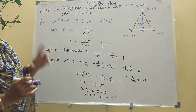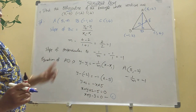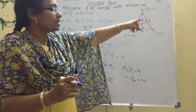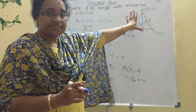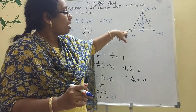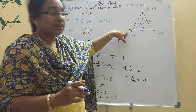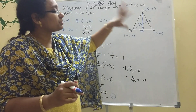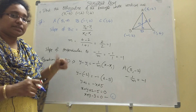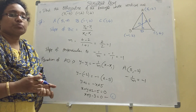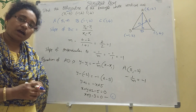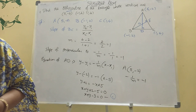Similarly, find the slope of AC, then the perpendicular slope. The opposite point is B, so find the equation of BE. Then find the intersection point of the two equations to get the orthocenter.